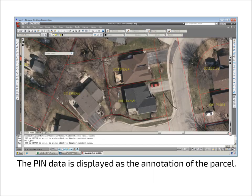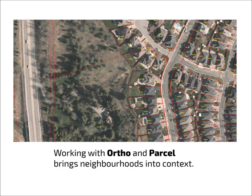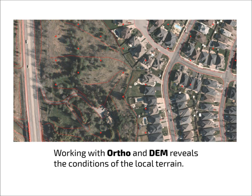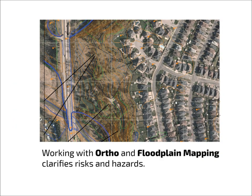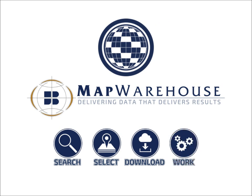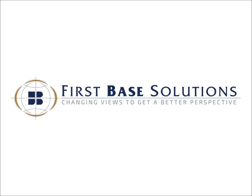The common grid in Map Warehouse makes it simple for you to purchase and work with different combinations of data types. Orthophoto combined with parcel data allows you to see neighbourhoods in context. Orthophoto combined with contour data lets you see the elevation, slope and aspect of the land. Combining orthophoto with digital elevation models allows you to create 3-dimensional surfaces. Combining orthophoto with floodplain mapping clarifies risks and hazards. Or use the photo base map to design anything you want. You've now completed the work section of the tutorial. To learn more, please visit FirstBaseSolutions.com.